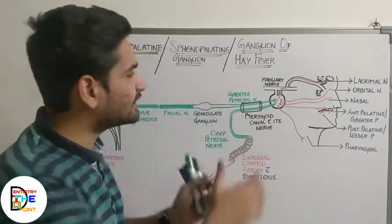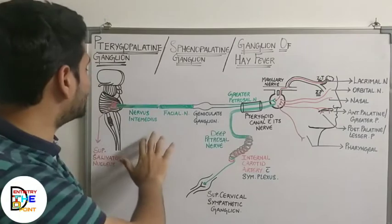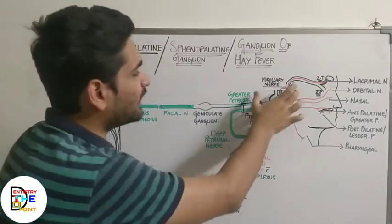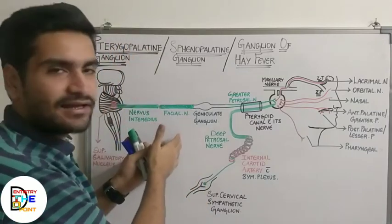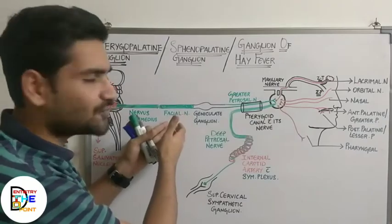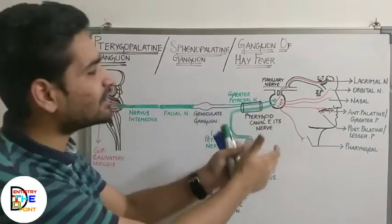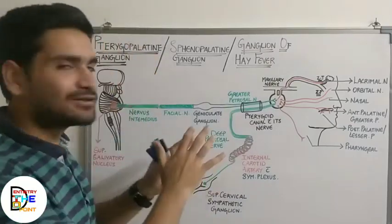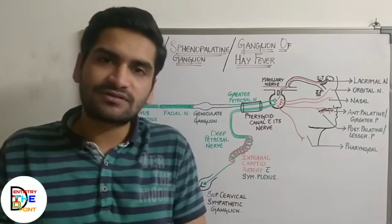Topographically, the pterygopalatine ganglion is related to the maxillary nerve, but functionally it is related to the facial nerve. So functionally the facial nerve is related, and topographically the maxillary nerve is related.